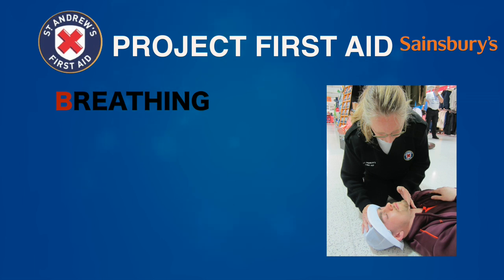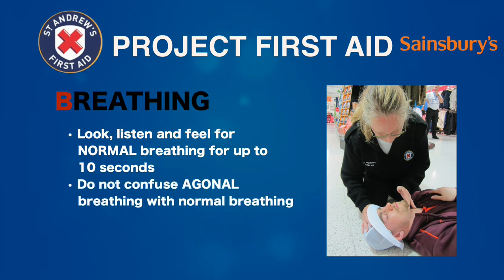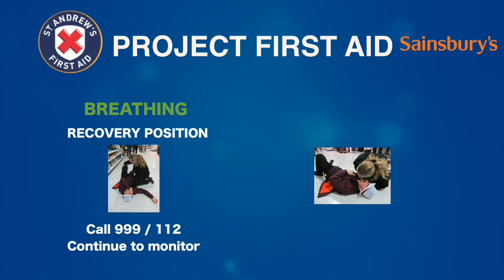Next, B is for breathing. Now the airway is open, you need to check if the casualty is breathing for themselves. Whilst still supporting their head in the tilted position, put your ear to their mouth. Look down their chest to see if it is moving. Listen for breath sounds and feel for breath on your cheek. Keep checking for up to 10 seconds. Sometimes a casualty will make irregular noisy sounds — this is not normal breathing. If the casualty is breathing, put them into the recovery position, then call 999 or 112.